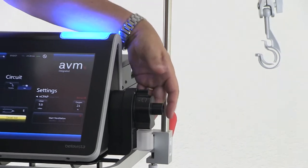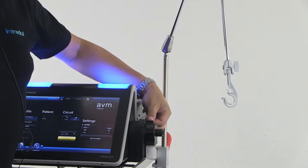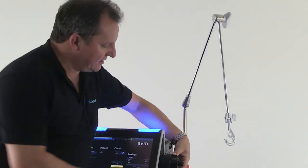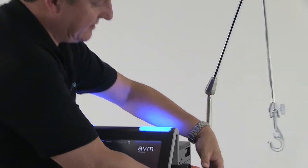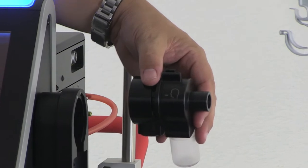The integrated exhalation valve has the jar and where my thumb is here there's a lock button. You press the lock button, rotate the jar towards the rear of the Bella Vista, and the exhalation valve comes out of the Bella Vista.